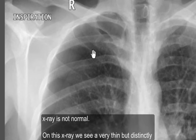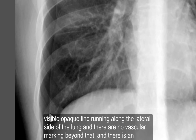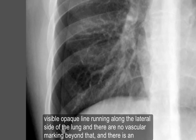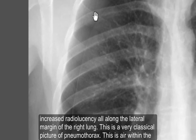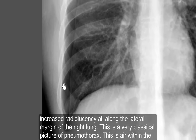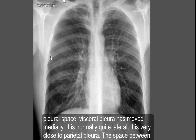On this X-ray we can see a very thin but distinctly visible opaque line running along the lateral side of the lung, and there are no vascular markings beyond that line. There is an increased lucency all along the lateral margin of the right lung. This is a very classical picture of pneumothorax — air within the pleural space. The visceral pleura has moved medially; it is normally quite lateral.